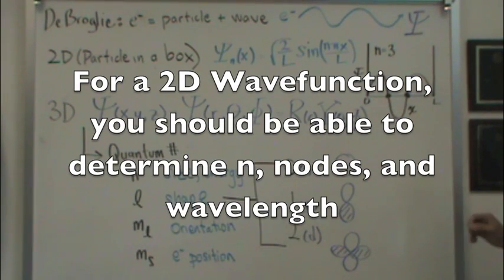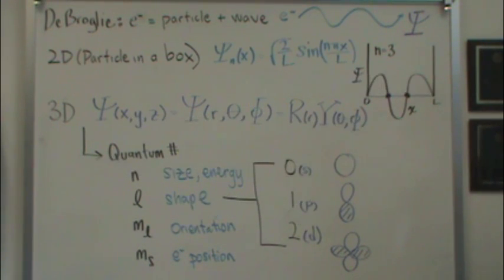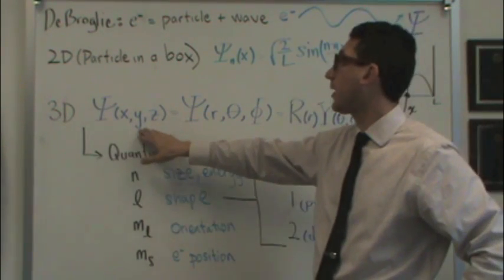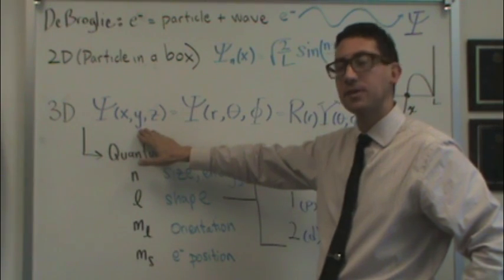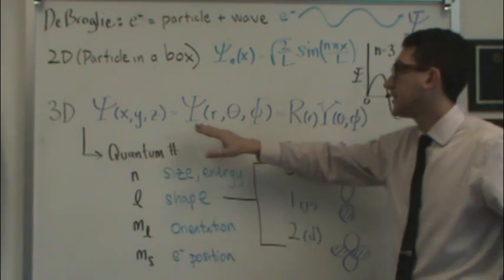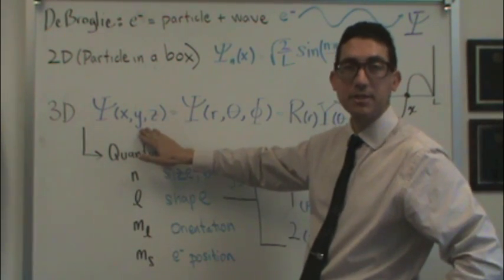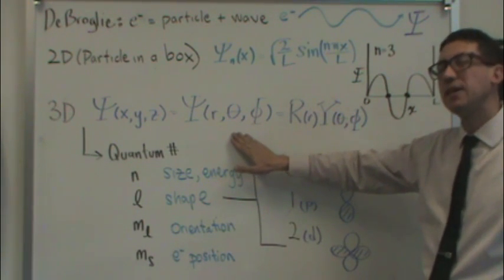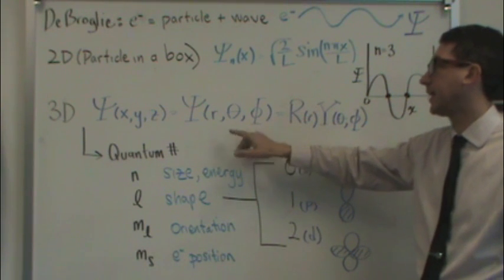So that's a 2D case. We're not going to do too much with it, except for you identifying nodes, determining what n would be. Now, let's look at a three-dimensional case here. In three dimensions, we have x, y, and z. So it gets a little more complicated. And these are called the Cartesian coordinates. Sometimes we use the spherical polar coordinates, which you may have seen in an advanced algebra class.